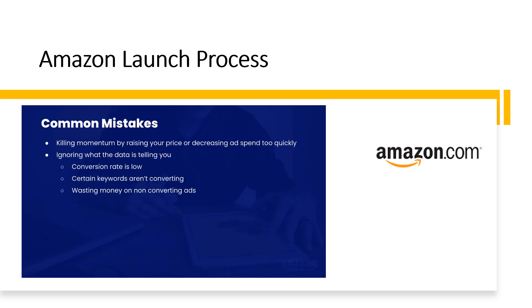Finally, let's talk about common mistakes made during launch. The first and most common is killing momentum by raising your price or decreasing Amazon PPC ad spend too quickly. When launching, it's important to maintain momentum until you get your keyword ranking. Another common mistake is ignoring what the data is telling you. If your conversion rate on your keywords is too low, that's something you need to adjust. If certain keywords aren't converting, don't just keep spending on them hoping for something to change.